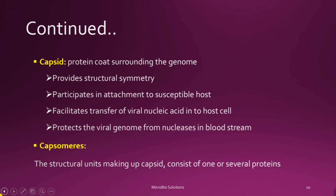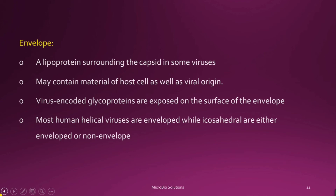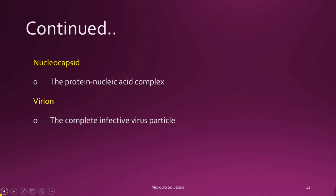In some viruses, there is a lipoprotein covering surrounding the capsid, called the envelope. The envelope is made up of material of host cell origin as well as viral origin — a lipoprotein layer containing components from both. Virus-encoded glycoproteins are exposed on the surface of enveloped viruses. Most helical viruses are enveloped, and icosahedral viruses can be enveloped or non-enveloped. The genetic material plus capsid together is called the nucleocapsid, and the complete infective virus particle is called the virion.